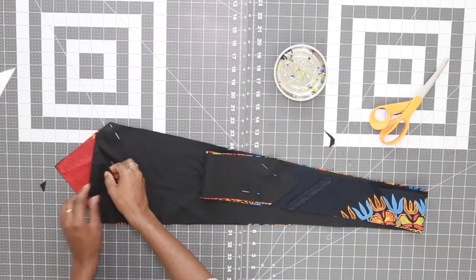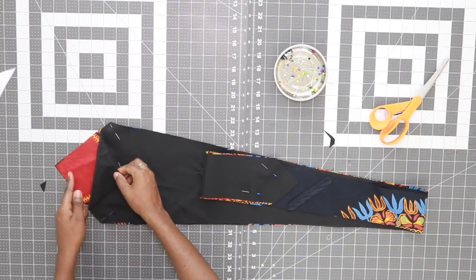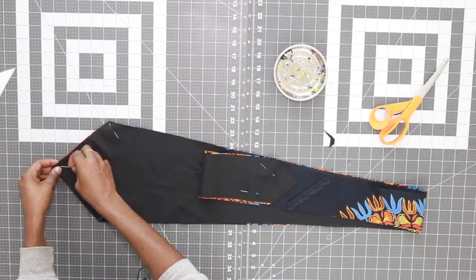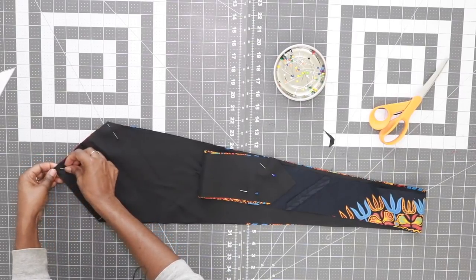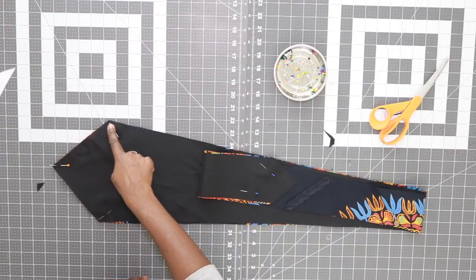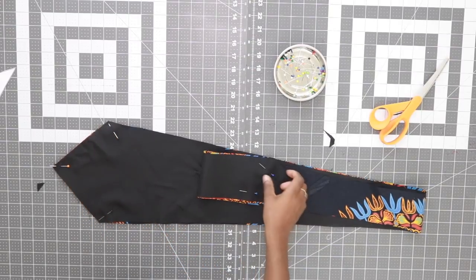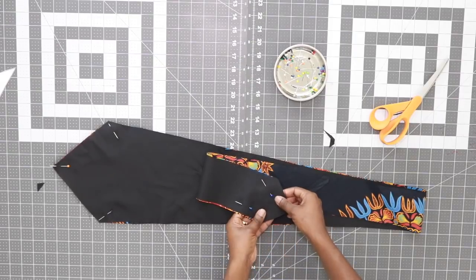Next, with the right sides facing each other, you want to pin. And you want to pin here, here, and here, because we're going to sew along this area and then also at the other end.